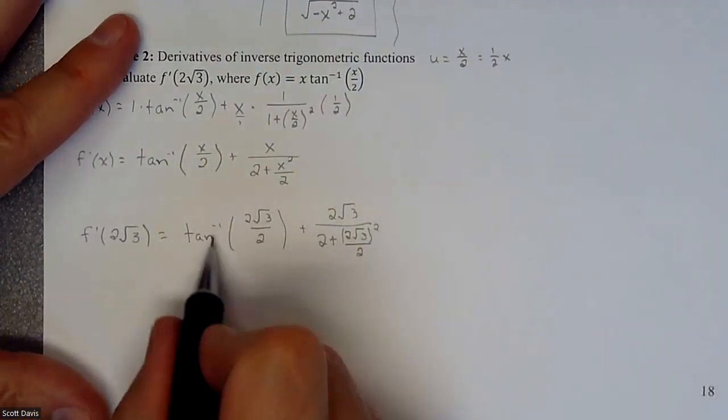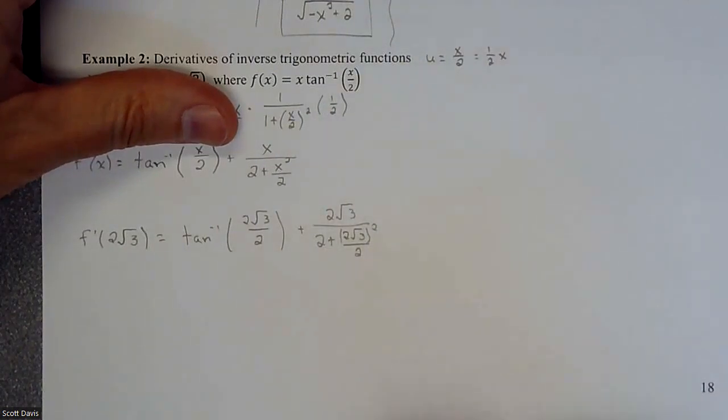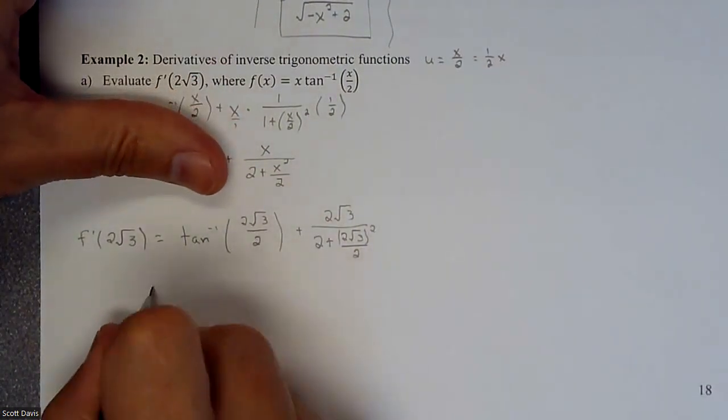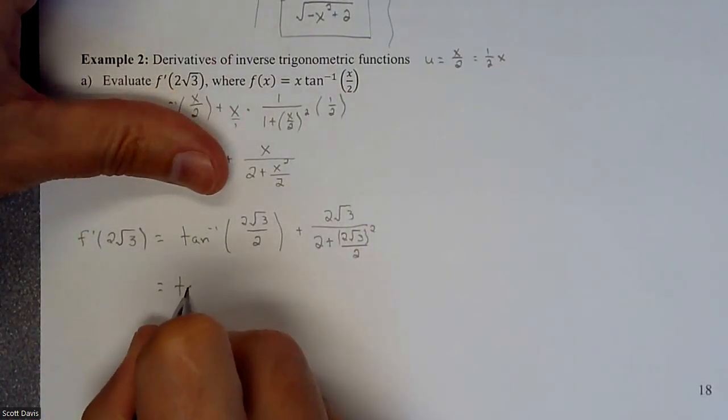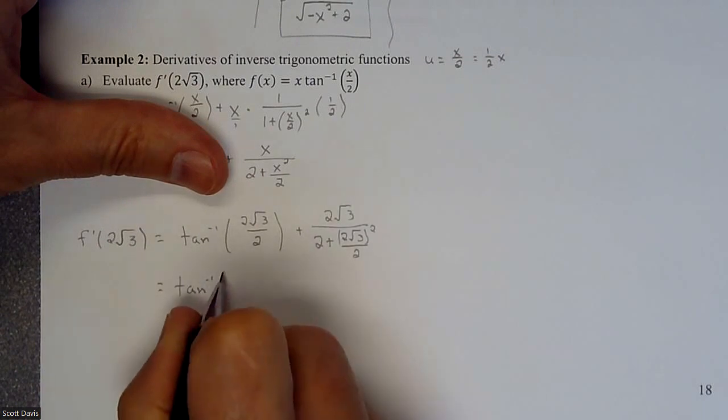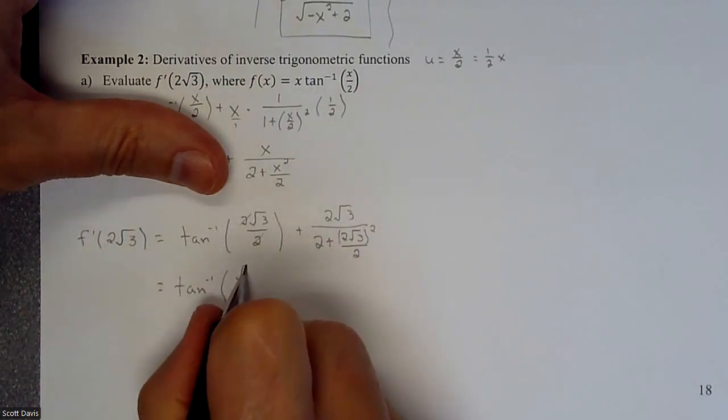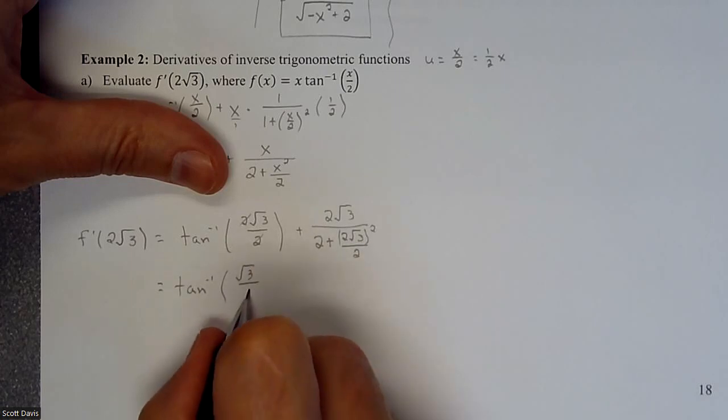And then over here, we have two root three over two plus two root three squared divided by two. All right, so we'll come back. Well, let's just do the trig. Let's get it out of the way. And then we can kind of fight through all that stuff. So if I, let me just start simplifying. Not quite there to really figure out what I got.